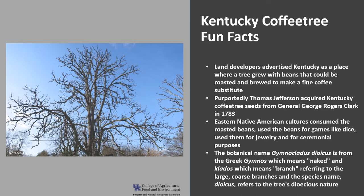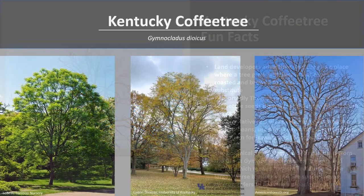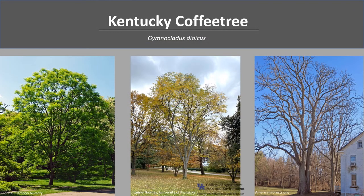Gymnoclatus dioicus is the botanical name for the Kentucky coffee tree. Gymnos is the Greek word for naked, and kratos is Greek for branch, which refers to the large coarse branches. The species name dioicus refers to the tree's dioecious nature. Thank you for joining me to learn more about the Kentucky coffee tree. I hope you get the opportunity to get out near a woodland, local park, or neighborhood, and check out this Kentucky native.